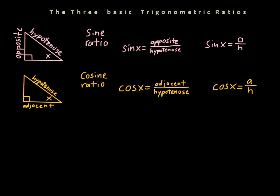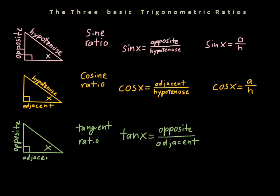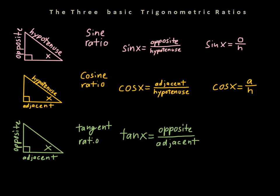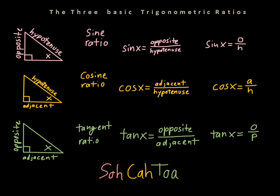We can also write cosine x equals A over H. The next one is a little weird — it's called the tangent ratio. The tangent of x equals opposite over adjacent. This one doesn't use the hypotenuse at all; it uses the opposite side over the adjacent side. For example, surveyors use this: if one side of the triangle is a hill, you can use the angle measurement to figure out how high the hill is if you know how far away from it you're standing.